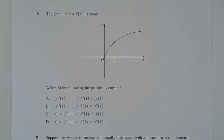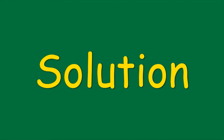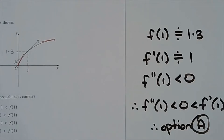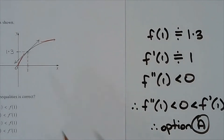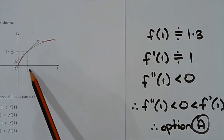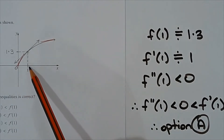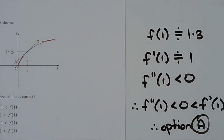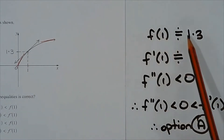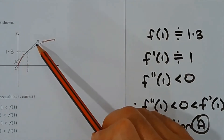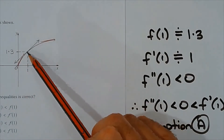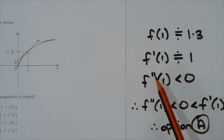Question 8. The graph of y equals f(x) is shown. Which of the following inequalities is correct? Assuming the graph is drawn to scale, the y-coordinate of this point is around 1.3. So f(1) is approximately 1.3. The value of the gradient of the tangent to the curve at this point is approximately 1, found by inspection.